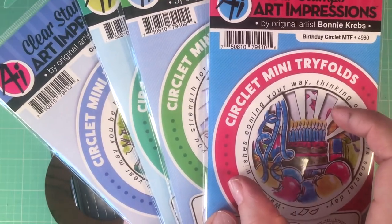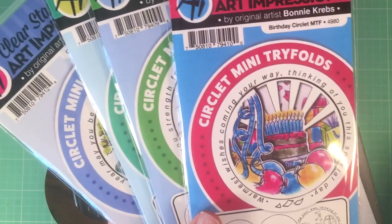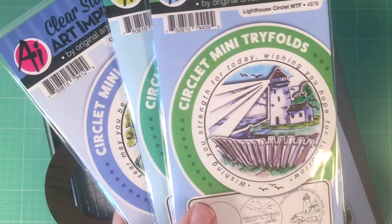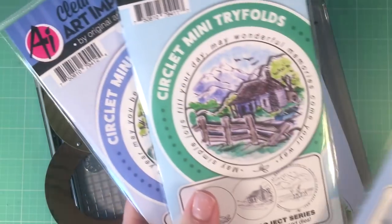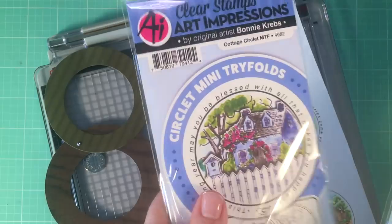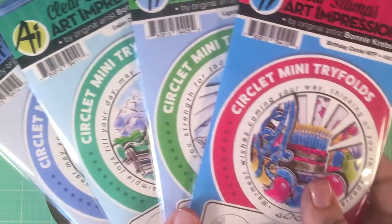All three of them stack on top of each other and they have a die that cuts through two of the panel openings, just like our previous mini tri-folds. But these actually have these adorable little scenes that are almost a complete scene rather than just a couple little images.